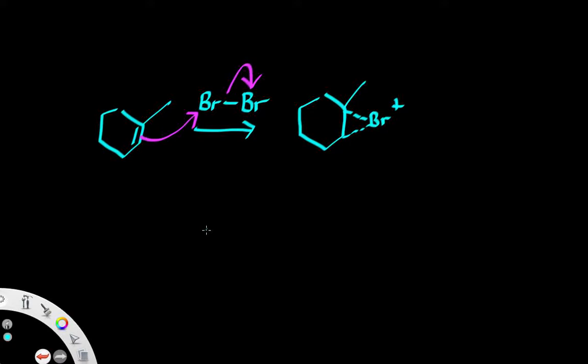And when it does that, that's when it will serve as an electrophile. So Br2 is polarizable and that's how it's able to serve as an electrophile.